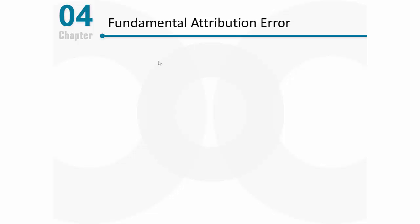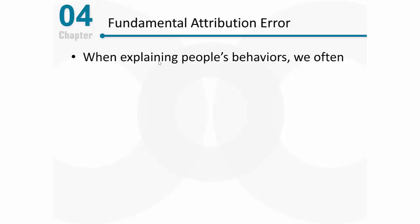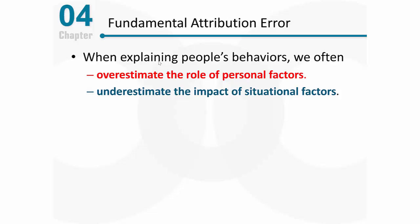Let's talk about another type of problem that occurs with mental processing: the fundamental attribution error. When explaining people's behaviors, we often overestimate the role of personal factors and underestimate the impact of situational forces. By default, we tend to make personal or internal attributions to explain people's behaviors, and we are much less likely to make external or situational attributions. That's because we see people behaving and tend to think they behave that way because of something about their personality, and we are simply less likely to understand all the situational forces they're operating under.